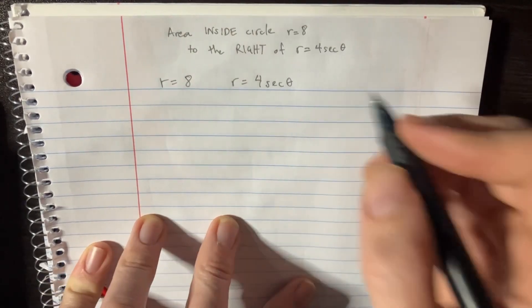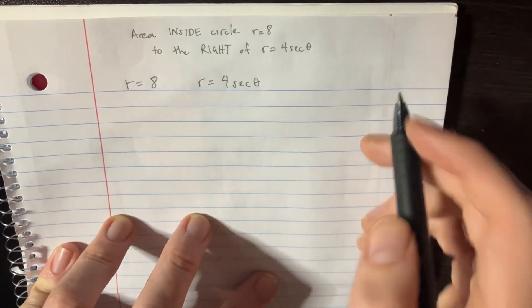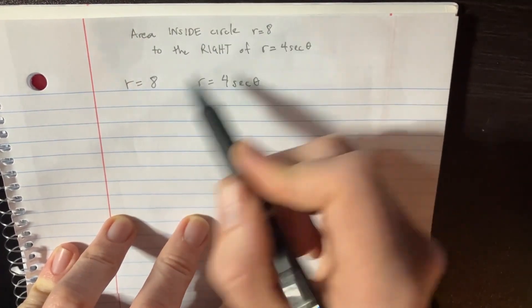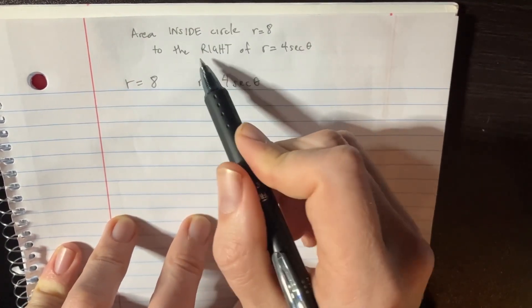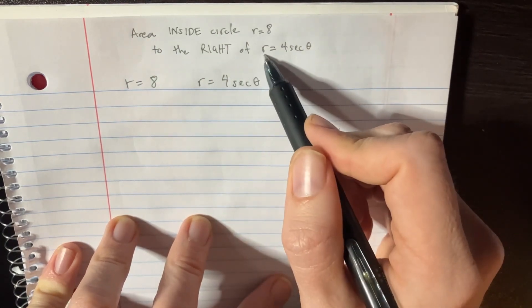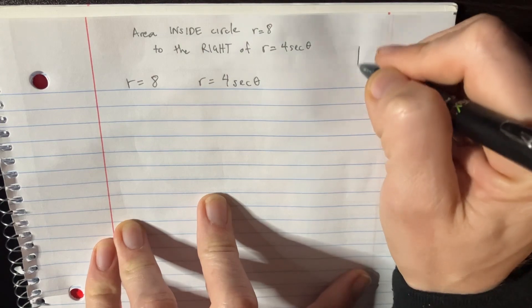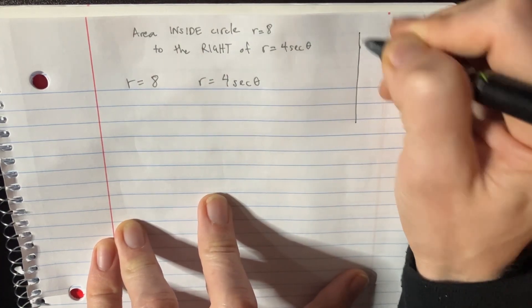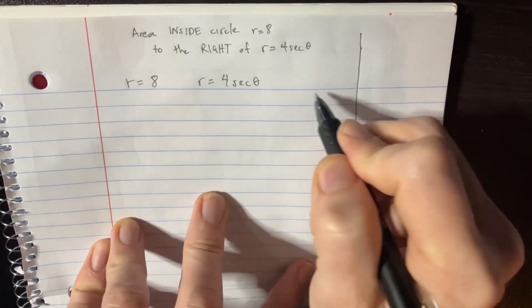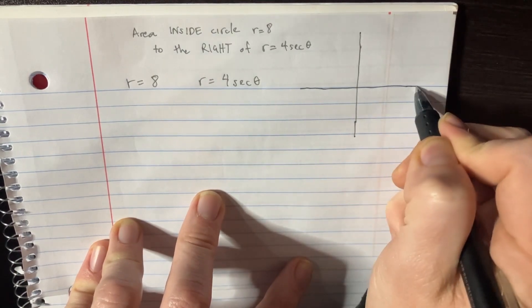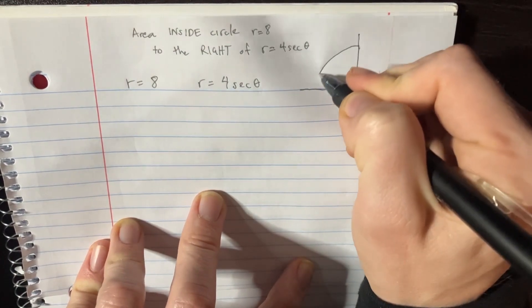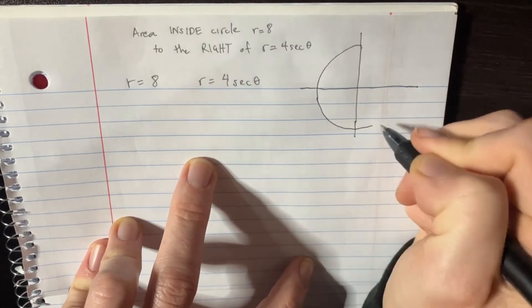Let's take a look at this problem. We're trying to find the area inside the circle r equals 8 and to the right of the line r equals 4 secant theta. We definitely have to graph this. I'm going to try to be a little bit careful on how I graph this right here, so make it real nice. We'll do a big circle like this.